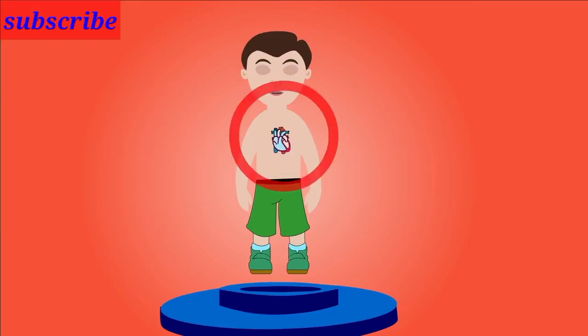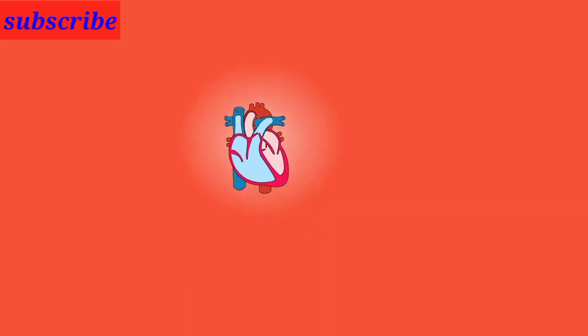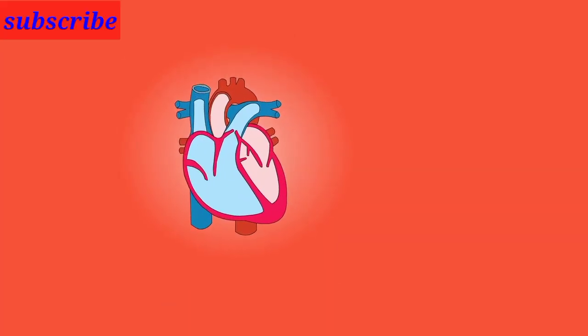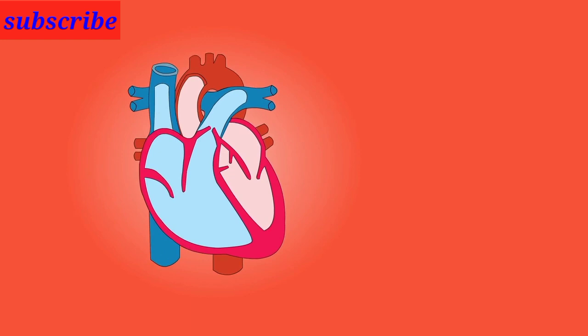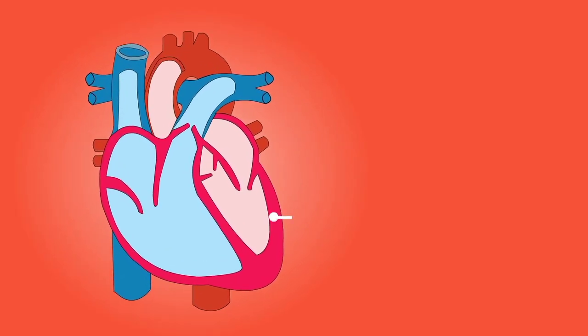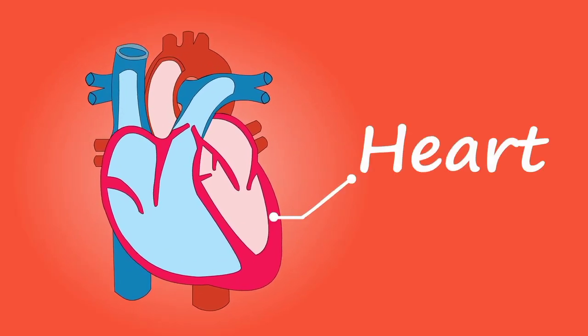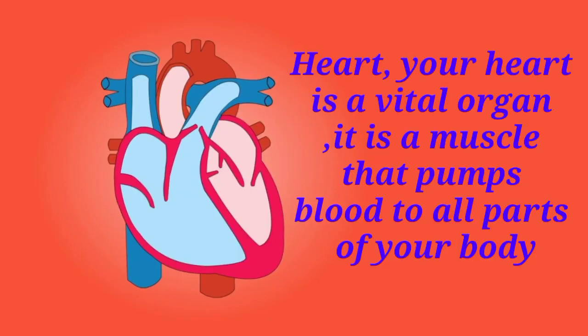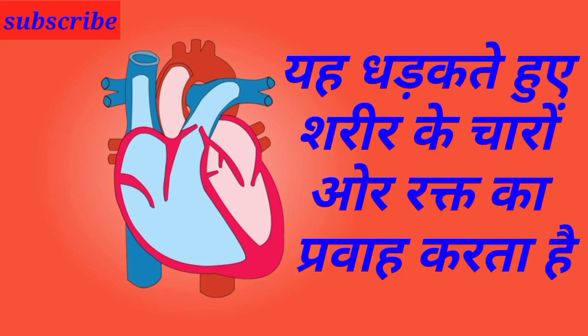This video is about seven types of organs with their functions in the human body. The heart is a vital organ — it is a muscle that pumps blood to all parts of your body.